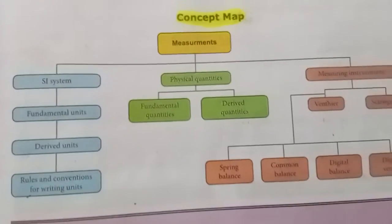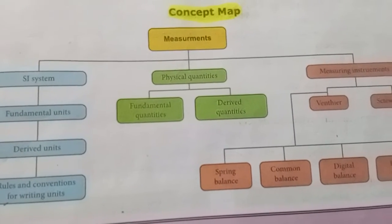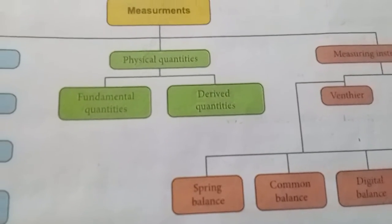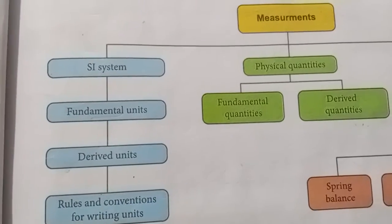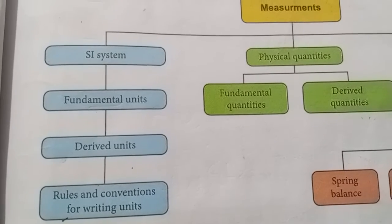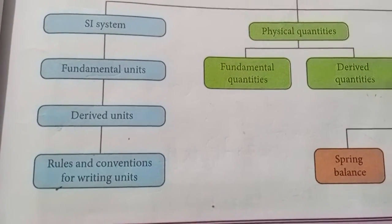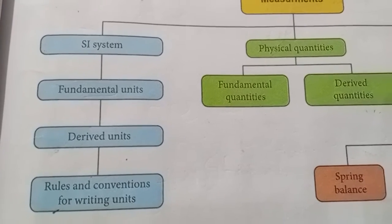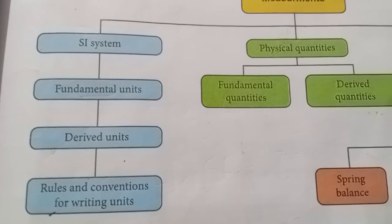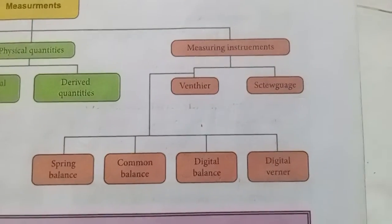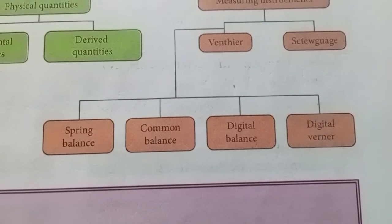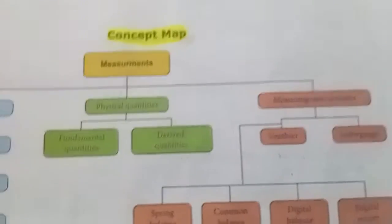That's all about the book back questions. The concept map from this lesson: Measurement covers physical quantities subdivided into fundamental quantities and derived quantities. The unit system is the International System (SI), which includes fundamental units — seconds, kilogram, meter — and derived units such as area and volume. Measuring instruments include vernier caliper, screw gauge, spring balance, common balance, and digital balance.